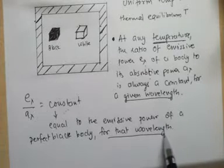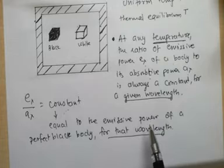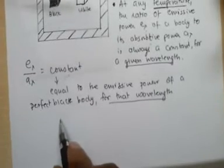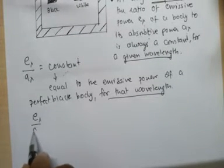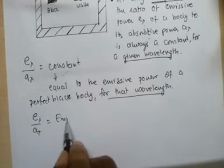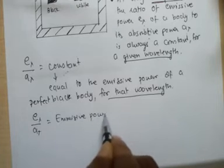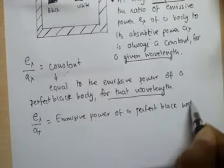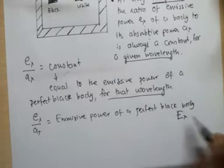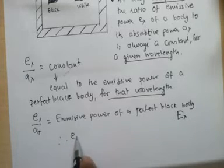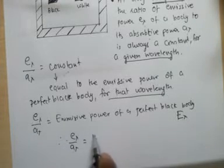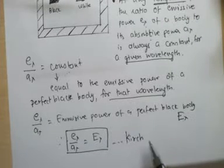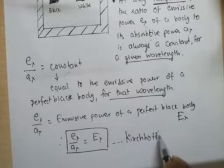To stress this point: we are talking of the entire thing for a given value of wavelength. So the mathematical representation of Kirchhoff's Law now becomes E_lambda upon A_lambda is equal to the emissive power of a perfect black body, denoted capital E_lambda. Therefore: E_lambda upon A_lambda equals E_lambda. This is the mathematical representation of Kirchhoff's Law.